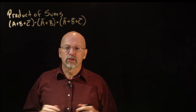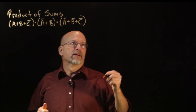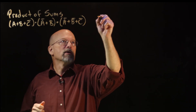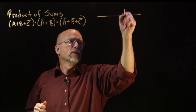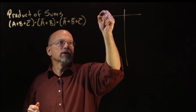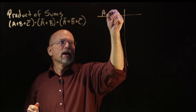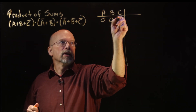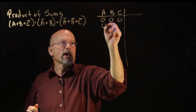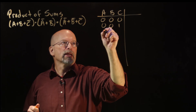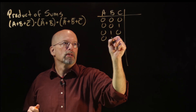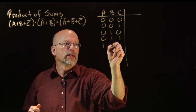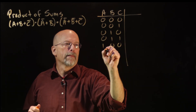What does the truth table look like? Well, we've got three inputs: A, B, and C. Three inputs give us eight possible combinations of ones and zeros. Let's get them all down here.